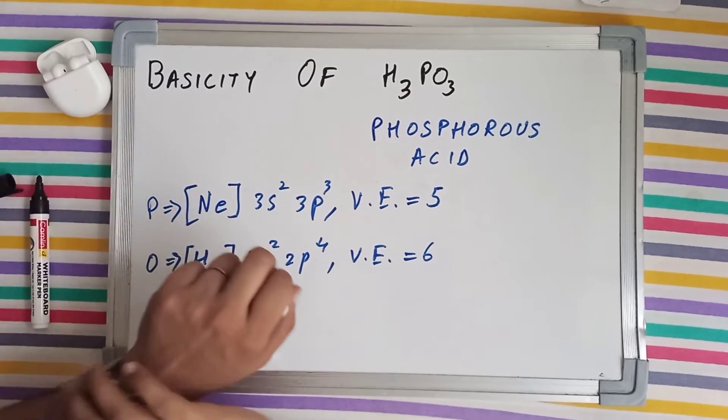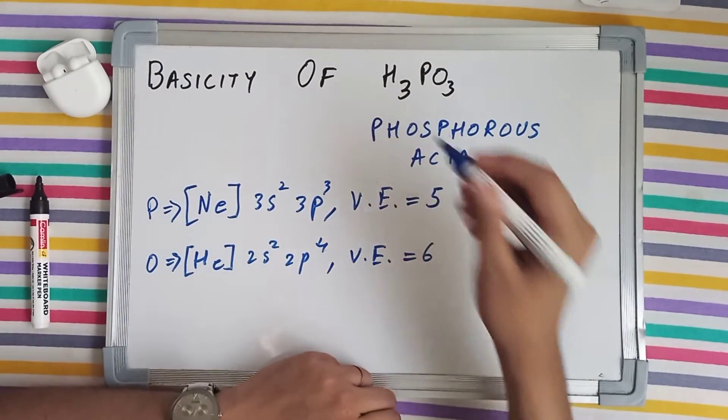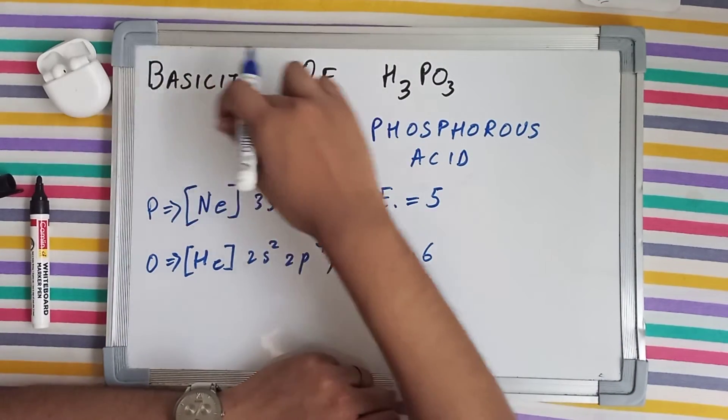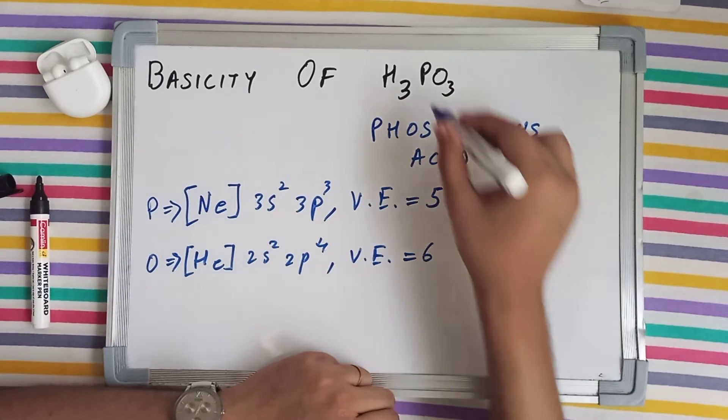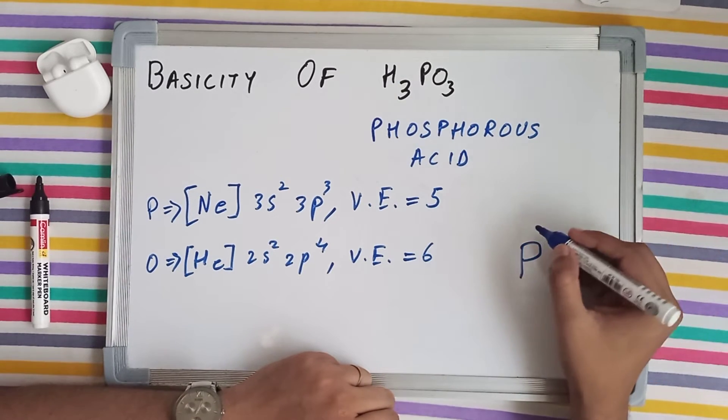Let's talk about the structure of H3PO3 and then we'll calculate the basicity of this particular molecule. Now the central atom is phosphorus because it is less in number, having 5 valence electrons.